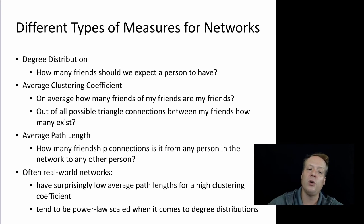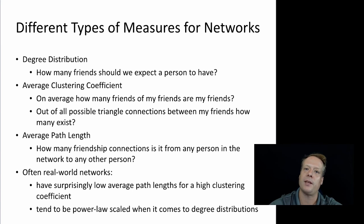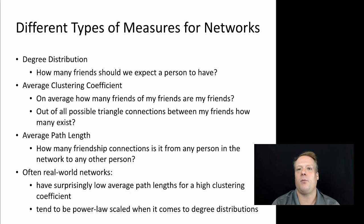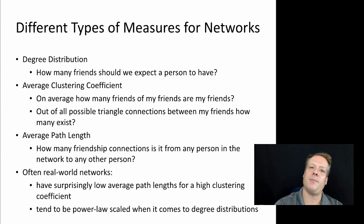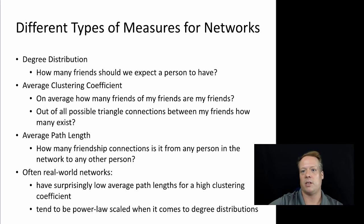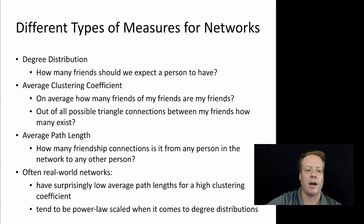In most real-world networks, they often have surprisingly low average path lengths despite a high clustering coefficient. Normally a high clustering coefficient causes path lengths to go up because of tight clusters, but real-world social networks manage to avoid this. Regarding degree distributions, they tend to be power-law scaled — a few individuals have many friends and many individuals have very few. Networks in NetLogo don't have to be social networks; they could be supply chains or feature-space representations. Networks are very powerful, and upcoming work on this textbook will add even more network content.